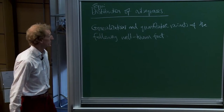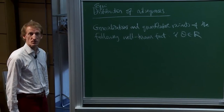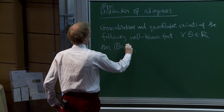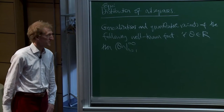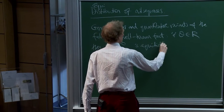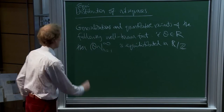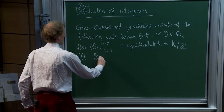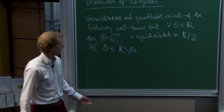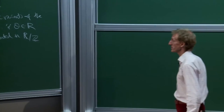That well-known fact is: if theta is a real number, then the sequence of values theta, 2 theta, 3 theta, etc., is equidistributed mod 1 if and only if theta is irrational.